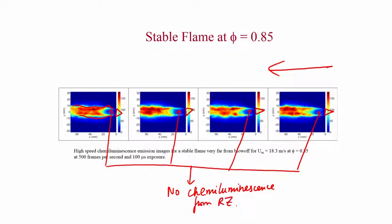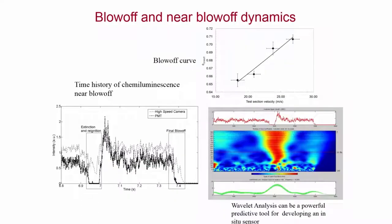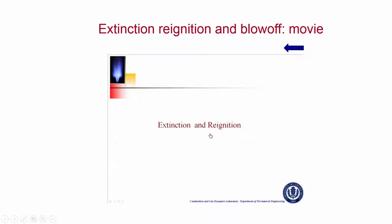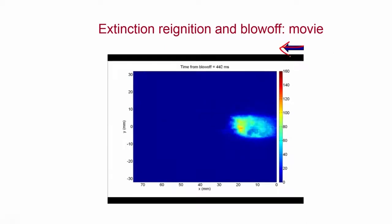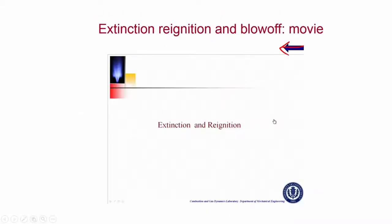This is the characteristic of a stable flame: no chemiluminescence from the recirculation zone. When you have blow-off dynamics, near blow-off, this is the blow-off curve — phi blow-off as a function of inlet velocity — and near blow-off you have this kind of a pattern: extinction and re-ignition images. As blow-off happens, the flow is from right to left. We will show the extinction and re-ignition event prior to blow-off and then exactly at blow-off how this flame actually goes.